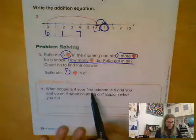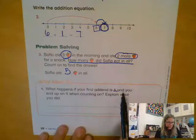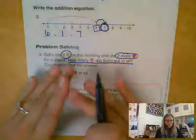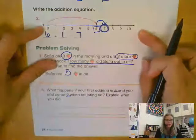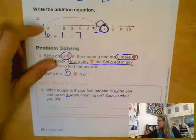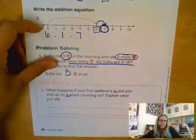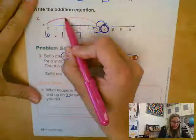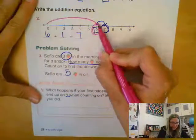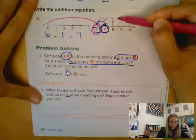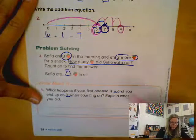Now it says what happens if your first addend is six and you end up on nine when counting? So if we look up here at one of our number lines, if our first addend was six, so our first big jump, if we landed on the six, and then we end up on the nine, that would be ribbit one, ribbit two, ribbit three.